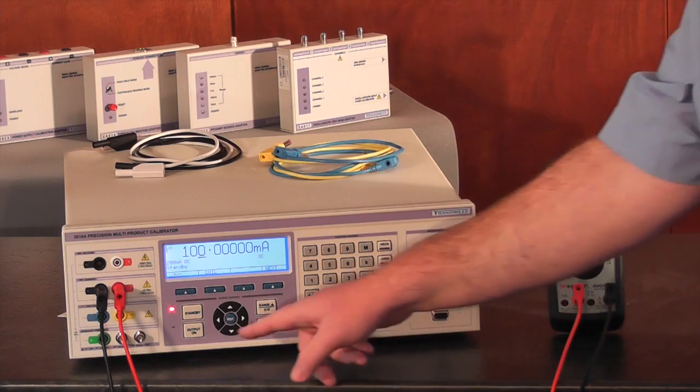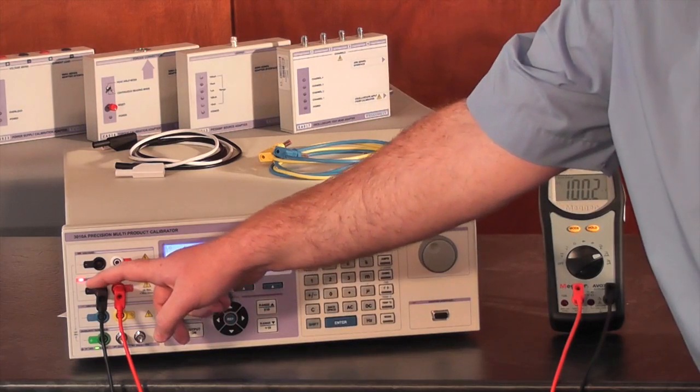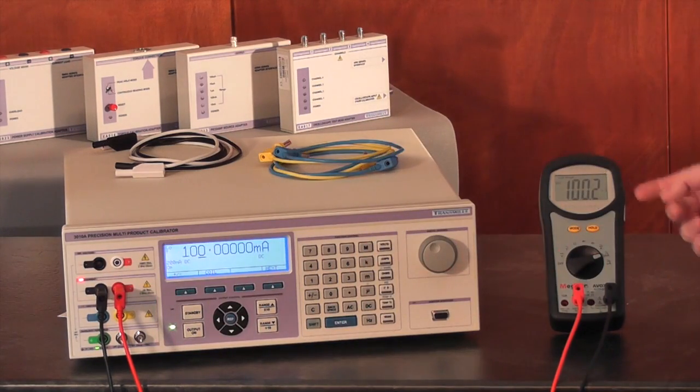We will now press output on. The output on is indicated, the terminals are indicated, and the reading is indicated on the multimeter.